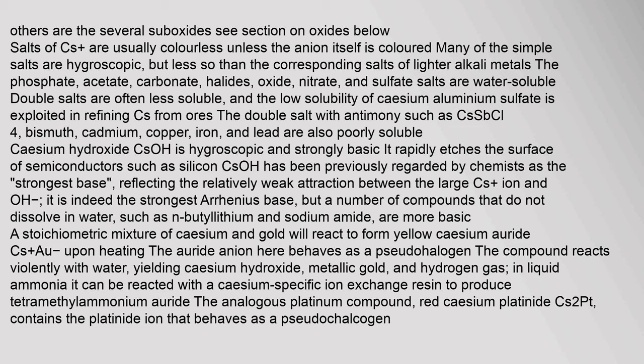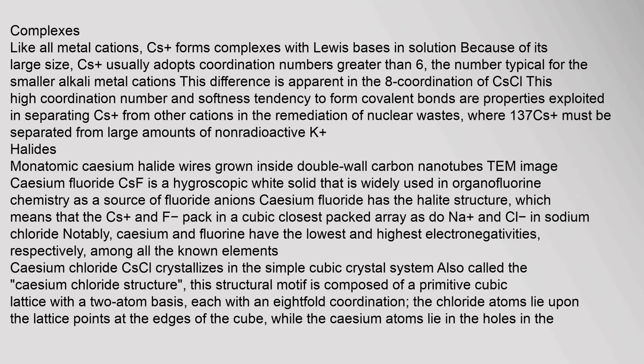Like all metal cations, caesium forms complexes with Lewis bases in solution. Because of its large size, Cs⁺ usually adopts coordination numbers greater than six — the number typical for smaller alkali metal cations. This difference is apparent in the eight-coordination of caesium chloride. This high coordination number and softness are properties exploited in separating caesium from other cations in the remediation of nuclear wastes, where ¹³⁷Cs must be separated from large amounts of non-radioactive potassium halides.